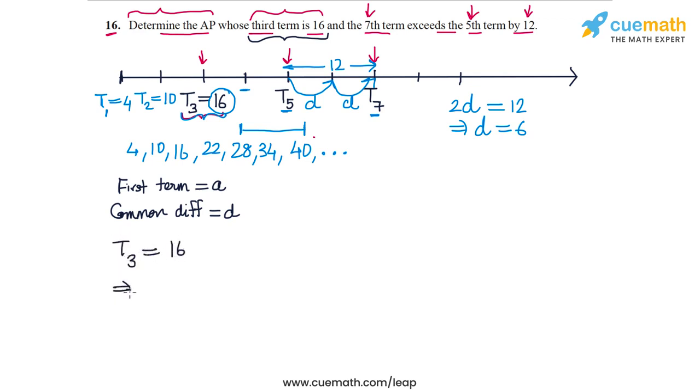Now T₃ in terms of A and D, we can write this as A plus N minus 1. N is 3, so N minus 1 is 2, so A plus 2D is equal to 16.